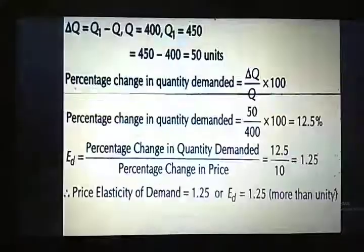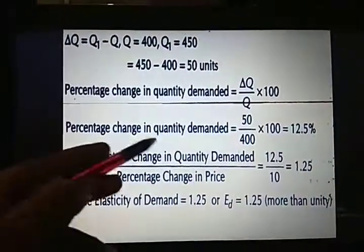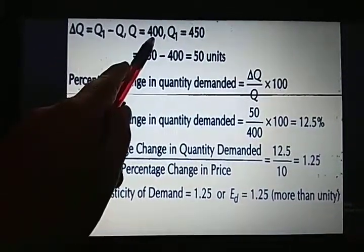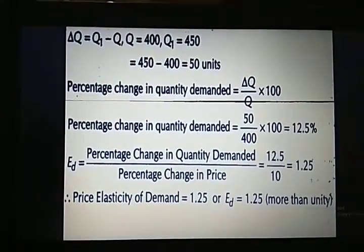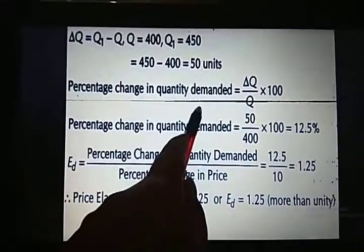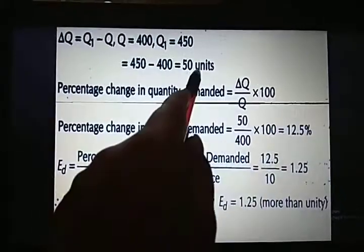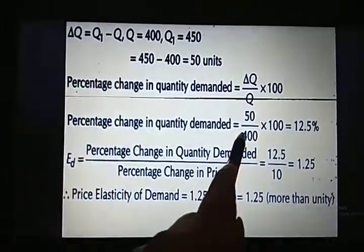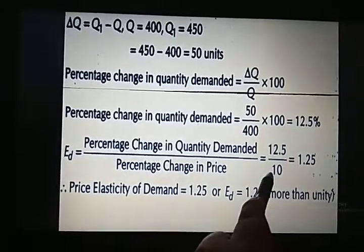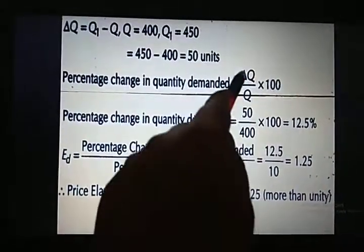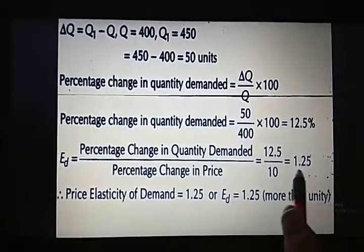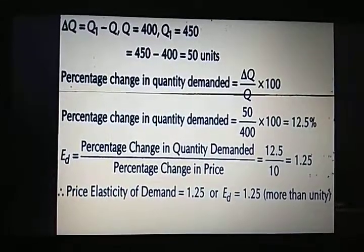Now we have one more numerical using the percentage method. The change in quantity comes to 50 units. Percentage change in price is already given in the question as 10 percent. We use the formula delta Q upon Q into 100 to calculate percentage change in quantity demanded: delta Q is 50, original quantity is 400, into 100, which gives 12.5 percent. Dividing 12.5 by 10, we get the answer as 1.25. So the price elasticity of demand here is 1.25.